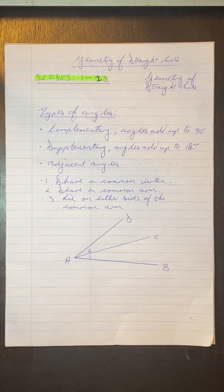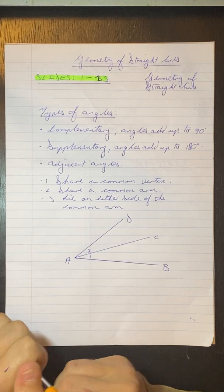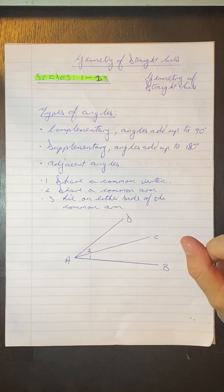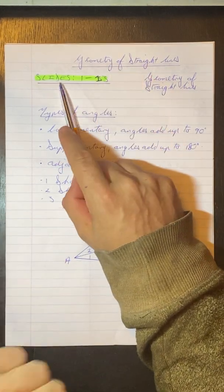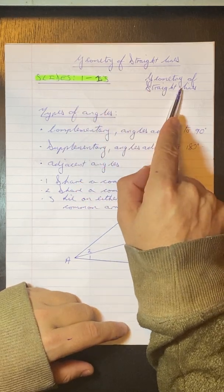Hello Grade Minds. Today we're going to be starting with Geometry. So you're going to be working in Book 2. We're going to start with some revision from Grade 8 stuff. We're going to be doing Geometry of Straight Lines, working from Slides 1 to 13 from the Geometry of Straight Lines PowerPoint.